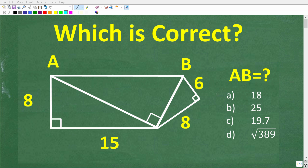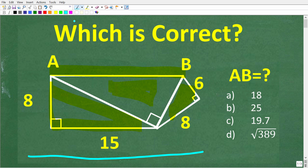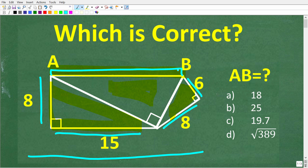Let's see if you know how to solve this math problem. What we have here is three triangles and we're trying to determine the exact length from A to B. Here is one triangle, then we have this smaller triangle, and then we have this other triangle right here. This triangle has the lengths of 8 and 15, and this triangle has 8 and 6. We're trying to determine the exact measure from A to B.